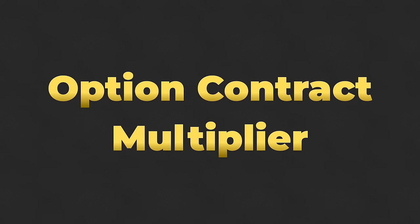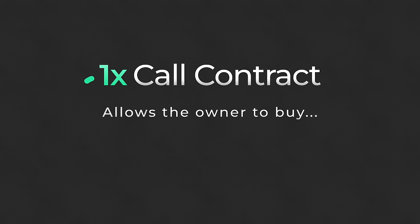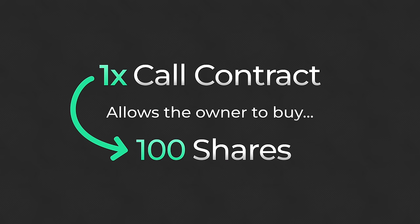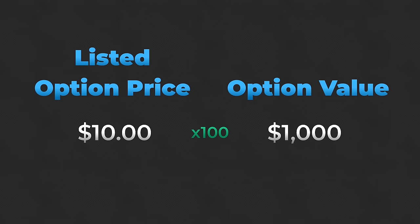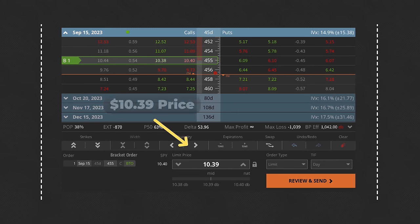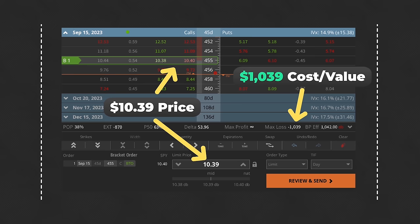This is a good opportunity to understand the concept of an option contract multiplier. In the case of standard equity options, such as options on Apple or Tesla, the multiplier is 100. This means that each option contract you buy gives you control over 100 shares of the underlying stock. This is why when we talk about option prices, we need to multiply the price by 100 to get the actual cost or value of the contract. For instance, if we see a call option with a price of $10.39, we actually need $1,039 to purchase this option.